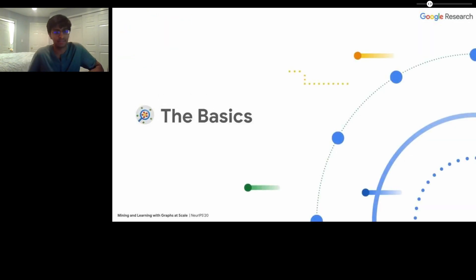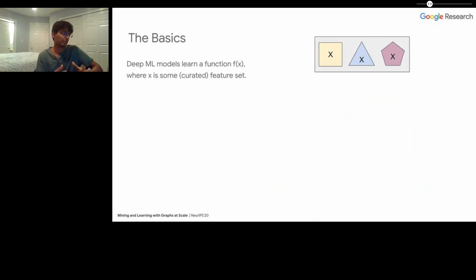Before we dive into COVID-19 and epidemiology and graph convolutional networks, I want to take a step back and talk about deep learning and why we think deep learning is a really powerful tool here. At its core, a deep ML model is learning some function f(x), where x is some curated feature set. In this case, we have a dummy example of shapes and colors.